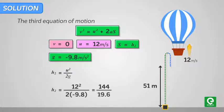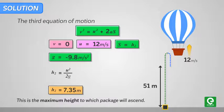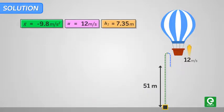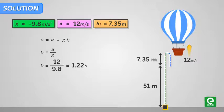On substituting the given values we get h2 equal to 7.35 meters. This is the maximum height to which the package will ascend. Now we will find the time it takes for the package to ascend 7.35 meters using v = u - gt1, or t1 = u/g.